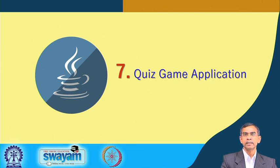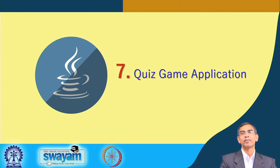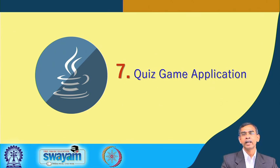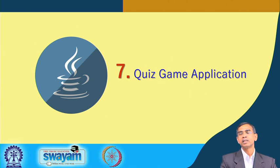Now let us come to the next project. This project is very similar to Kaun Banega Crorepati. There is a quiz game where Mr. Bachchan conducts the show, but since Bachchan is not available all the time, our computer can play the role of Bachchan. Here a question from the repository will be popped up, the user will be allowed to select an option, and if the correct option is chosen the score will increase. If the user suspects any result, just like in KBC, 50 percent of options will be removed and accordingly the score will be reduced, leaving only 2 options. This is exactly the quiz game application.